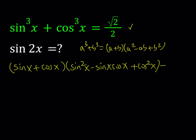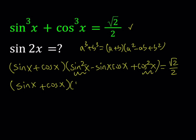And as you know, this is equal to square root of 2 divided by 2. Now notice that sine squared x plus cosine squared x is equal to 1. So I can write my expression as sine x plus cosine x multiplied by 1 minus sine x cosine x.